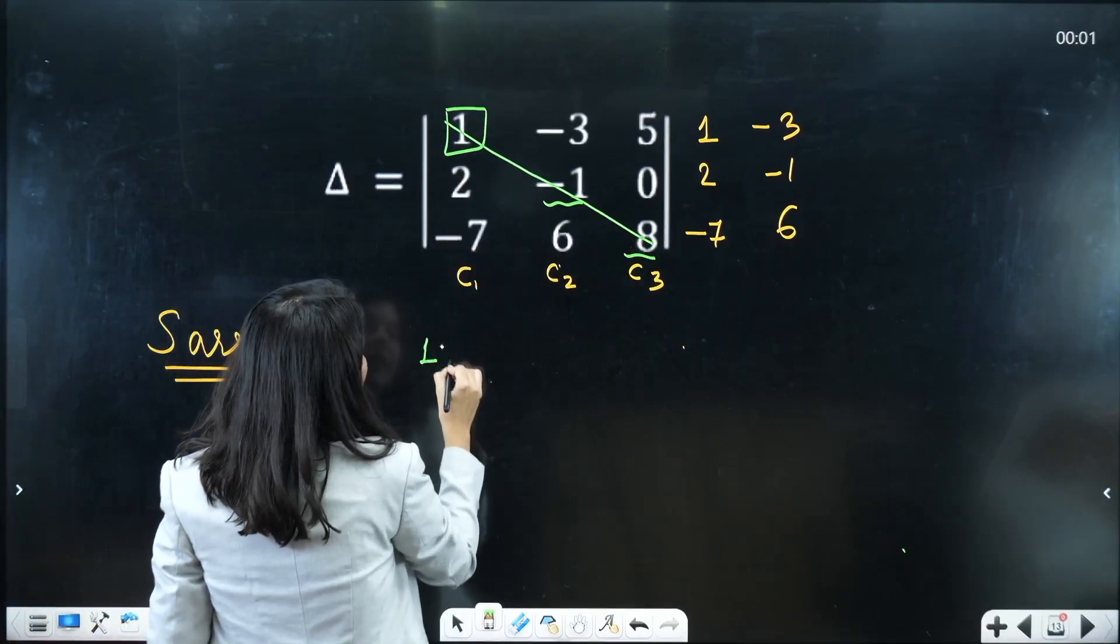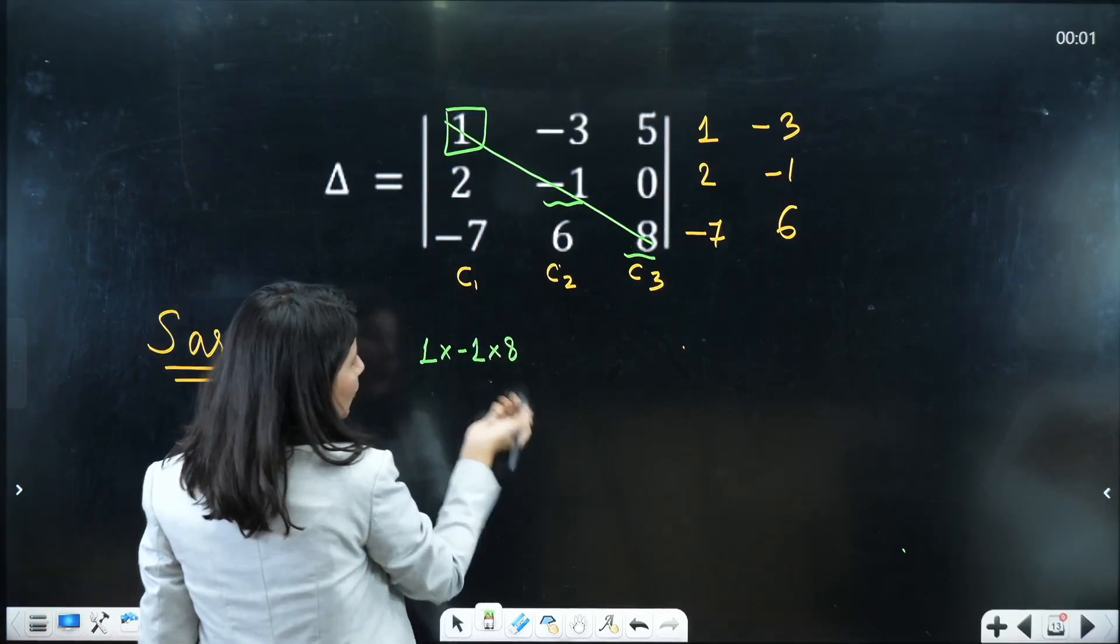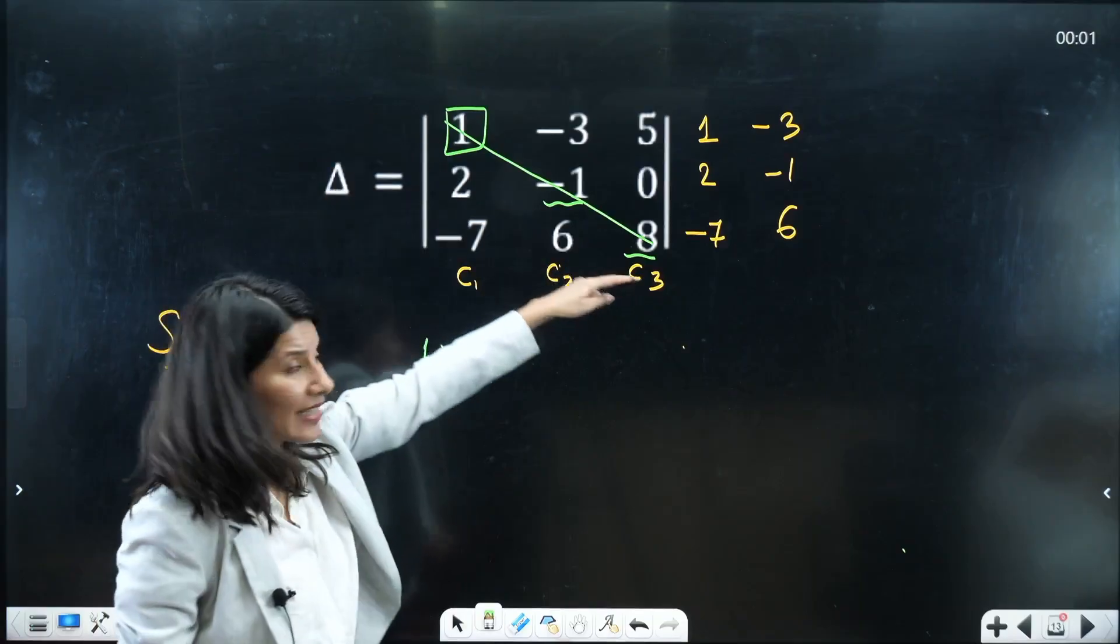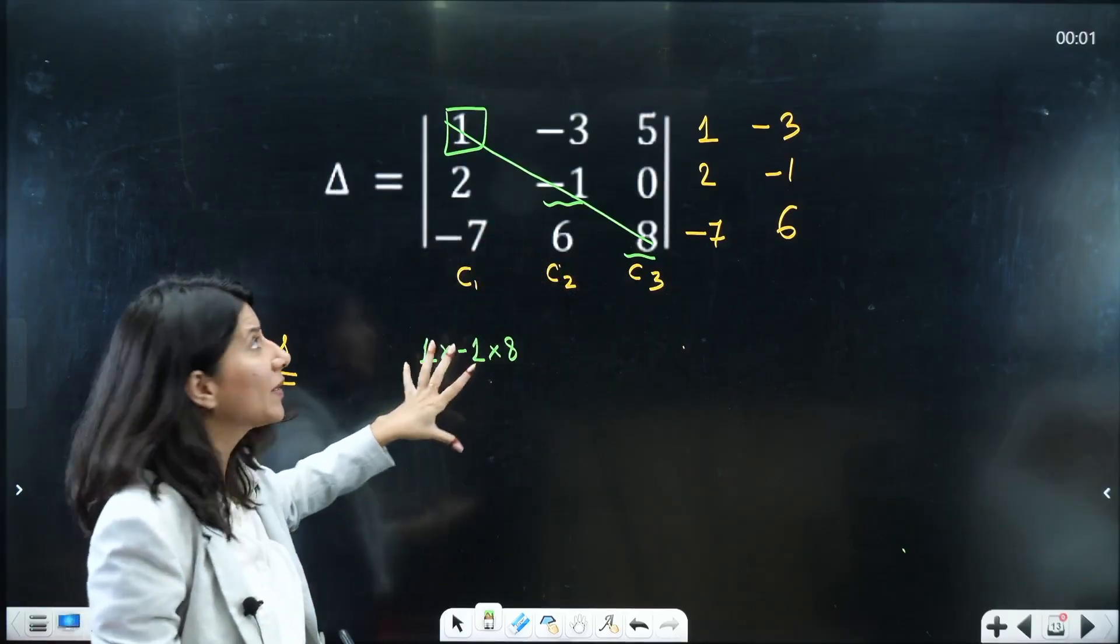1 into minus 1 into 8. So you are going to get minus 8. You can directly multiply also, I am just writing so that you get the clear picture.